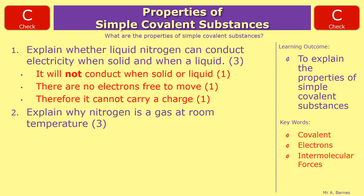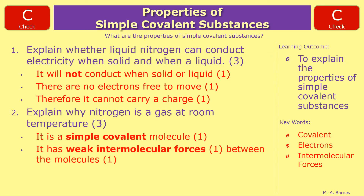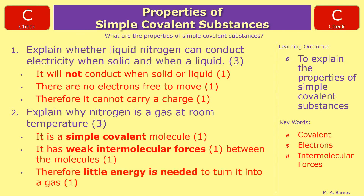Question two: explain why nitrogen is a gas at room temperature. The first thing you've got to say is it's a simple covalent molecule — you have to state what type of molecule it is. Then you talk about the properties: it has weak intermolecular forces between the molecules, and therefore little energy is needed to turn it into a gas.